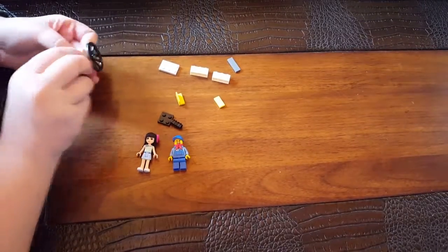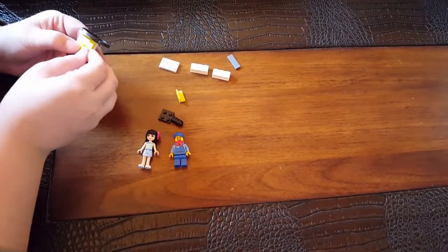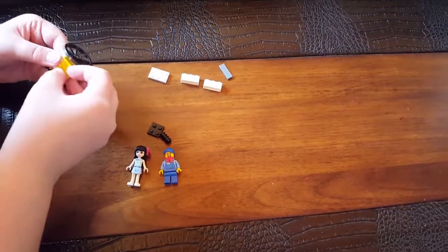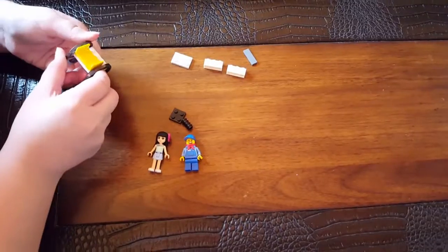So take your L piece, your flat piece, and your other L piece. And this, all together, makes a comfy cushion.